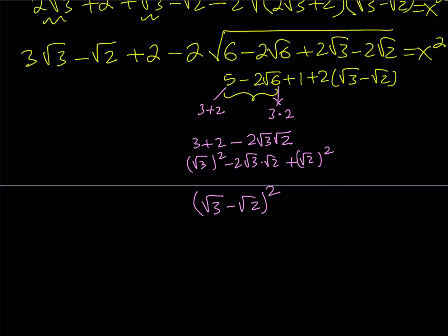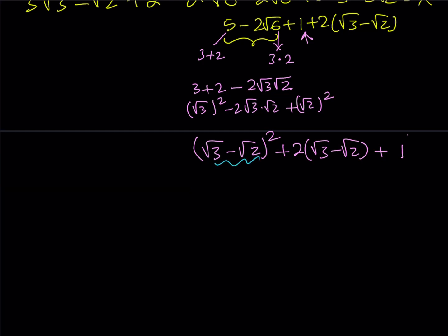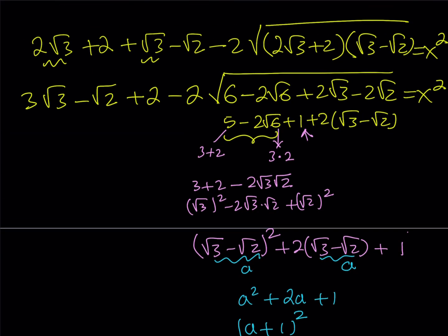So putting it all together: we started off with a perfect square (√3 - √2)², and I'm adding 2 times that quantity plus 1. If I call (√3 - √2) equal to a, then I have a² + 2a + 1 — and that is (a + 1) squared. So the entire expression under the radical is a perfect square, specifically (√3 - √2 + 1)². That's why I've been saying this is perfect! And why is that significant? Because my expression is under a radical — if it's something squared, I can easily simplify it.